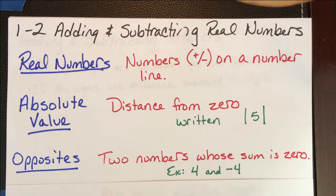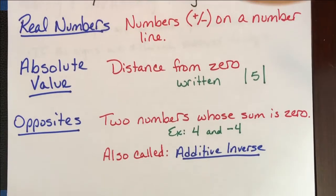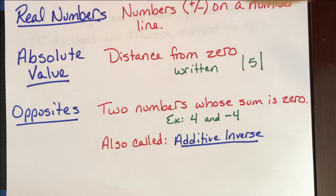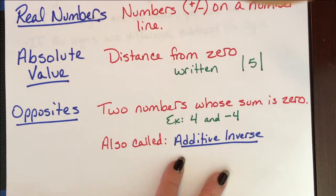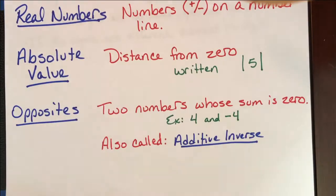Then we have opposites. Opposites are two numbers whose sum is zero. An example would be four and negative four. These are also called the additive inverse, and this refers to the inverse property of addition that says when you have a number and you add it to its opposite, it equals zero. It's one of those laws that everybody kind of understands, and nobody ever remembers the names of them.